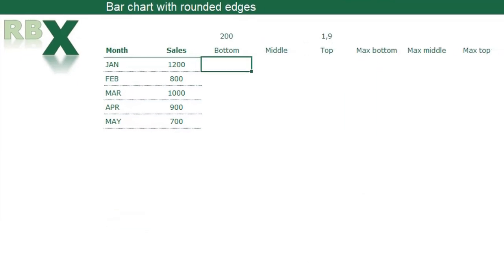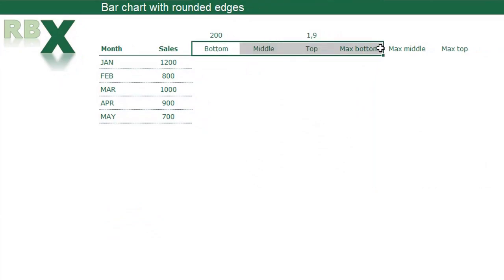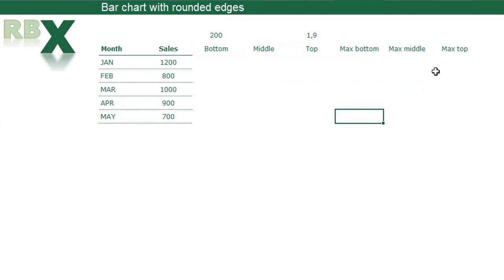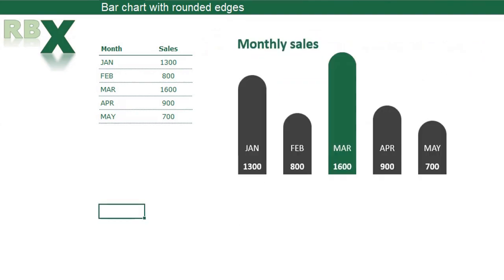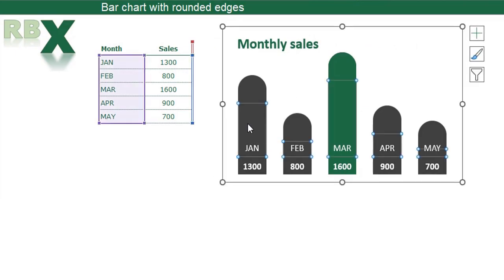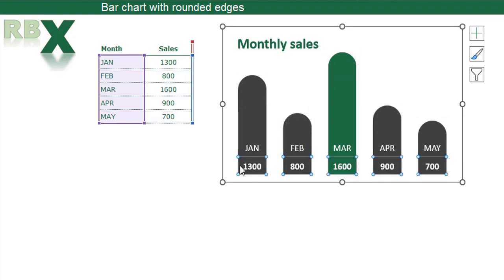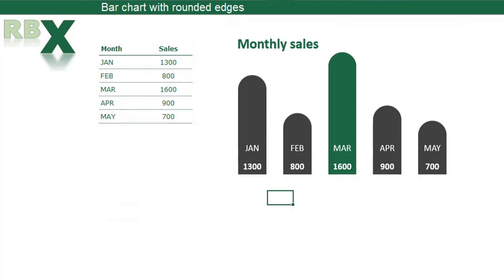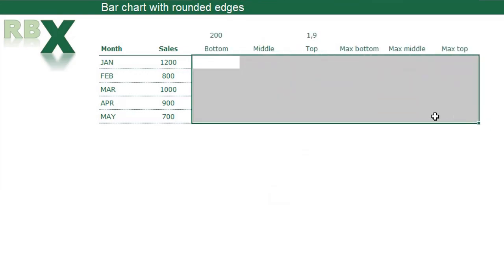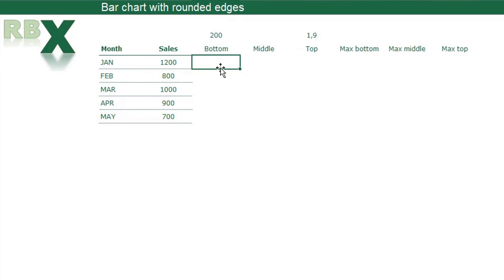I'm going to sheet 2 to create this chart. You can already see I have 6 helper columns: the bottom, the middle, the top, and the max bottom, middle and top. When I select my chart and click on the bars you see I have a top, a middle and a bottom. The top is to create the round edge. The middle and the bottom part is to create a double data label with the month and the value on the bottom of the bars. I use some functions for that which I'm going to show you.